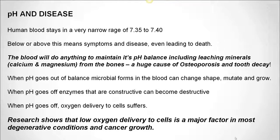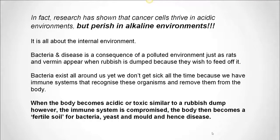When pH goes out of balance, microbial forms in the blood can change shape, mutate and grow. When pH goes off, enzymes that are constructive can become destructive. And when pH goes off, oxygen delivery to the cells suffers. Research has shown that low oxygen delivery to cells is a major factor in most degenerative conditions and cancer growth. Research has also shown that cancer cells thrive in acidic environments but perish in alkaline environments — it's all about the internal environment, also known as the terrain.